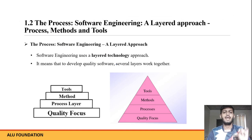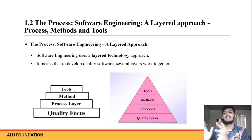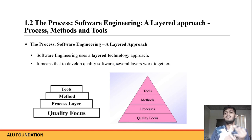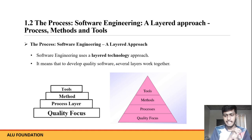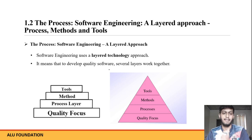So, a simple point is: what is the process, methods, tools? At the end, what is our goal? What is quality software? Quality can be maintained when we use proper tools, methods, and proper process. If we have proper tools, methods, and processes, at the end we get quality software. This is the basic concept.